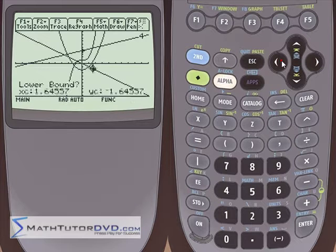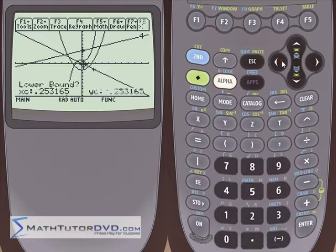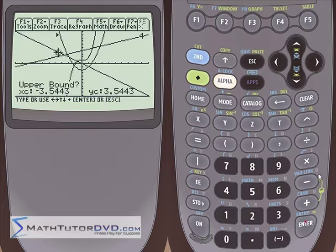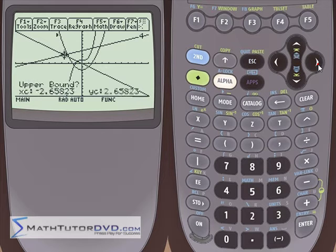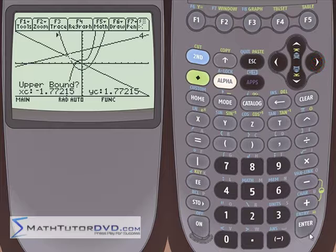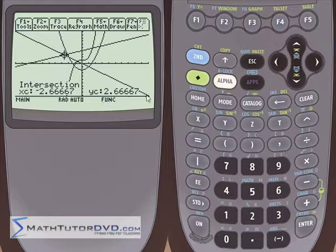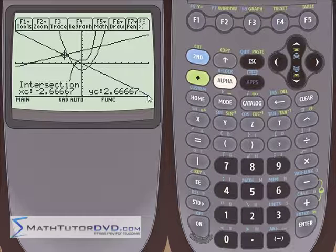Now we've locked in the two curves that we're interested in on the calculator. Now it's asking us for the lower bound and the upper bound for the intersection point. So we need to go over to the left-hand side of the intersection point and hit enter. And then go to the right-hand side of this intersection point anywhere we like. Enter. Let it think about it for a second. It'll snap to the intersection point, negative 2.666 and y is 2.666. So that's basically how you use this function.